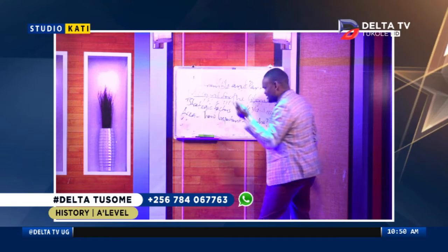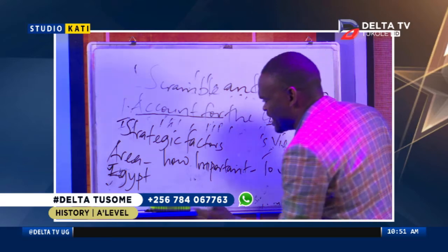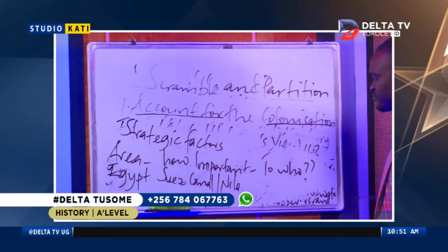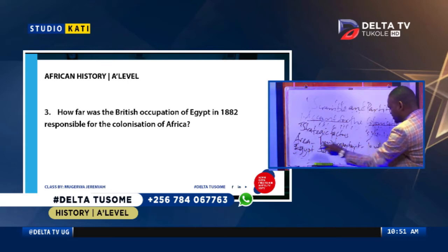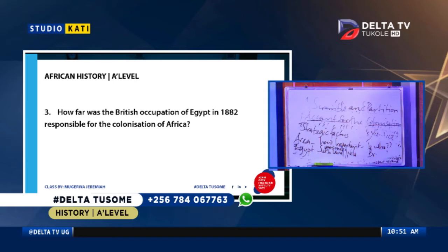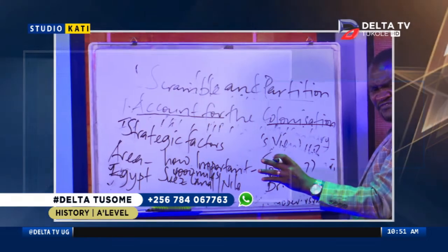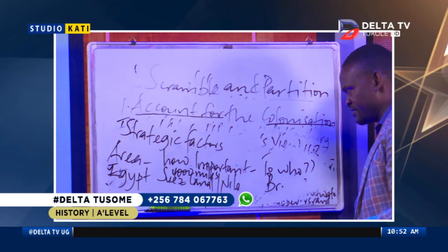Take Egypt as an example — the Egyptian Question. What made Egypt important? Egypt had the Suez Canal and the Nile. The Suez Canal shortened the distance to and from Britain's economic empire by four thousand miles. That made Egypt strategic to Britain. We are currently illustrating how strategic factors led to colonization — we're not yet at the question of how the British occupation of Egypt led to colonization, which is a separate matter.